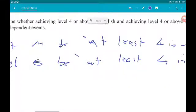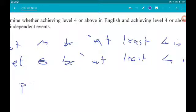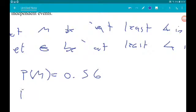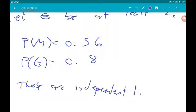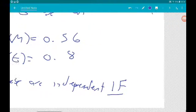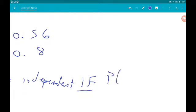Okay, so we can say the Probability of M is 0.56 and we can say the Probability of E is 0.8. Now, these are independent if the Probability of M times the Probability of E is equal to the Intersection.